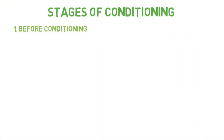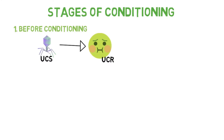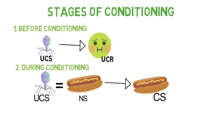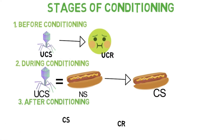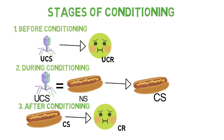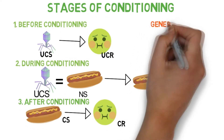You have three stages of conditioning in classical conditioning. First, before conditioning, you just have an encounter with the unconditioned stimulus and unconditioned response — a virus that causes nausea. Then during conditioning, you make the association between the neutral stimulus and the unconditioned stimulus; the stomach virus and the hot dog become associated, and the hot dog is now known as the conditioned stimulus. Finally, after conditioning, the conditioned stimulus is paired with the conditioned response — this is the point where all hot dogs make you feel nauseated.